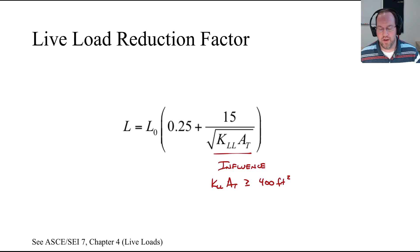This reduction factor is only applicable if your influence area is greater than 400 square feet. If you have an influence area less than 400 square feet, you do not get to use this term. Also note that you're not allowed to reduce your live load below 50 percent for any element collecting load from a single floor, or below 40 percent if you're collecting load from two or more stories at once.